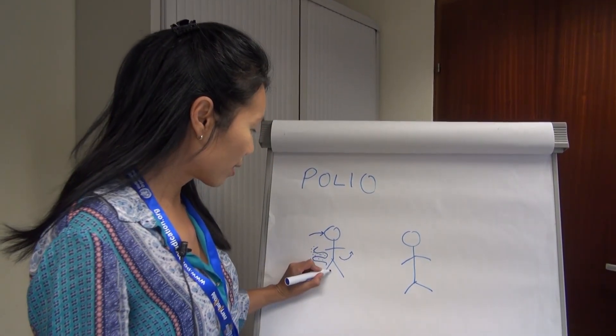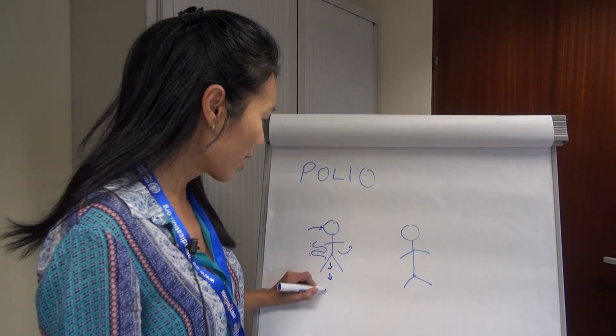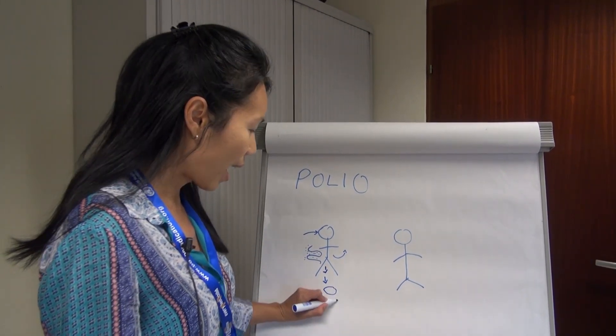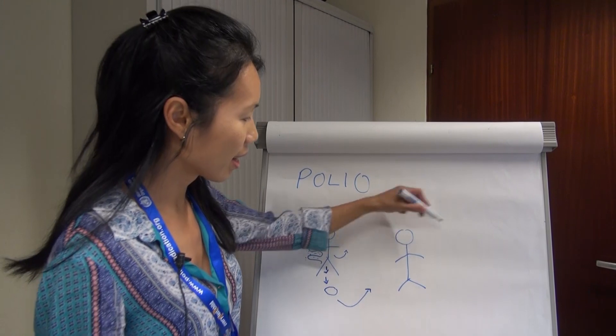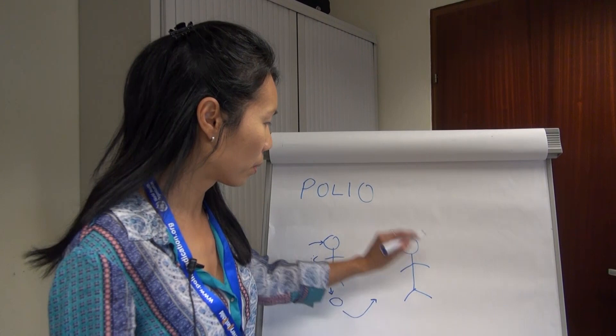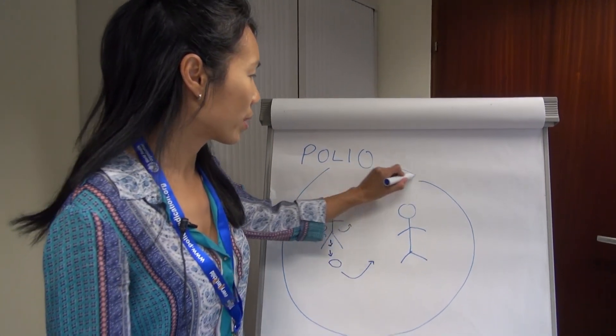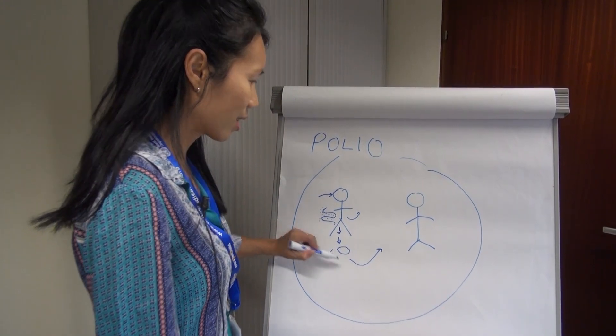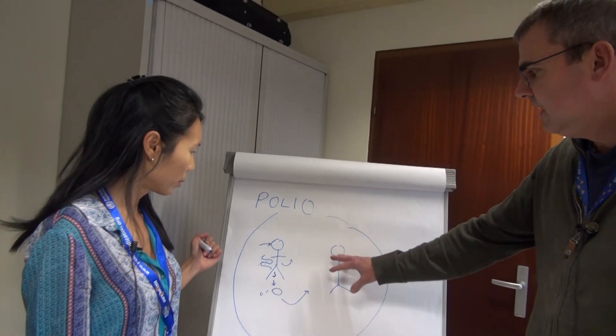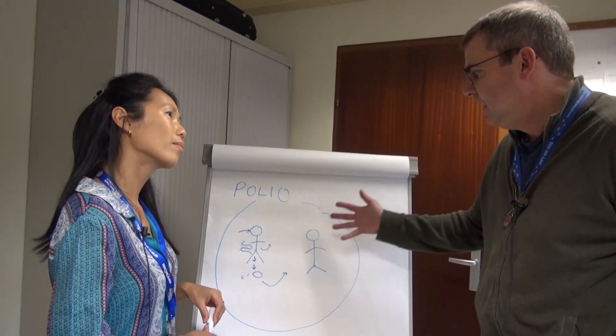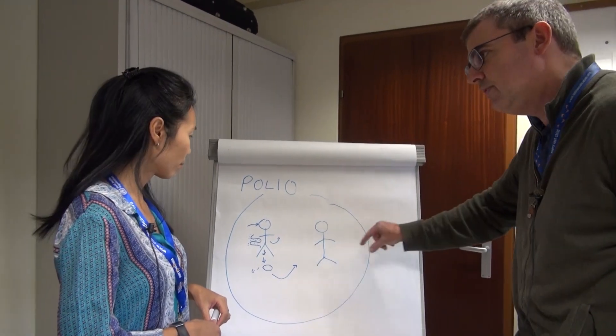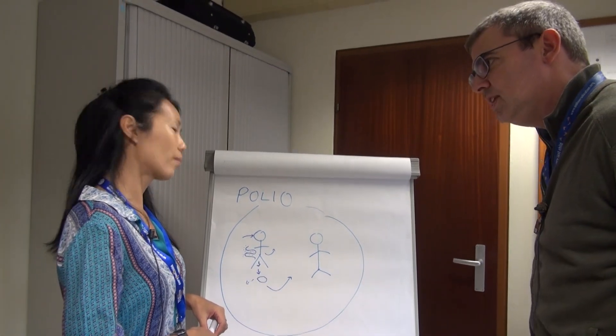But what also happens is the virus then passes through the gut and it gets shed for even a matter of weeks in the stool and that is still infectious and can infect another person in the community. So you can imagine if you have different people in this population that don't have protection from polio virus, then this virus can spread quite quickly. And so this is for wild polio virus, and as long as it keeps finding susceptible children, meaning not vaccinated children, it will continue to survive and spread in a community. That's right.